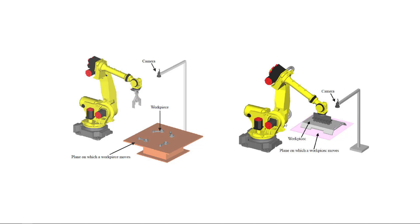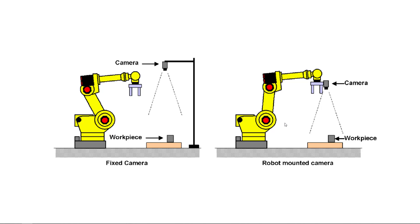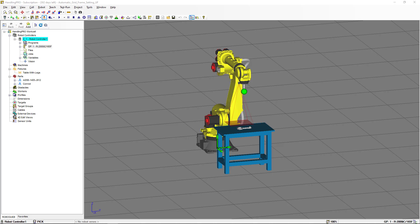One important thing to notice is that if the working area is a user frame — that is, if the part is located on a table — it can be either a fixed mounted camera or a robot mounted camera, but the calibration grid frame is still going to be a user frame. On this video, we are going to consider the part located on a table, and what I am going to show you today is another way to set the calibration grid frame.